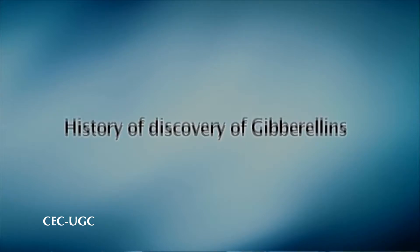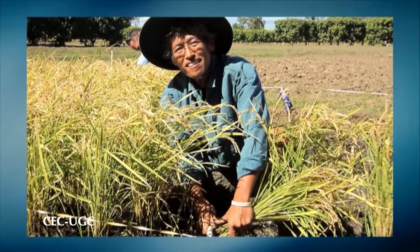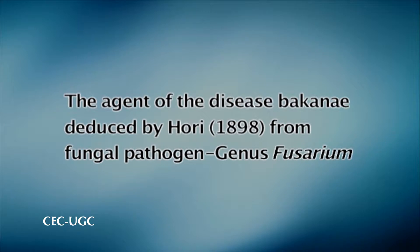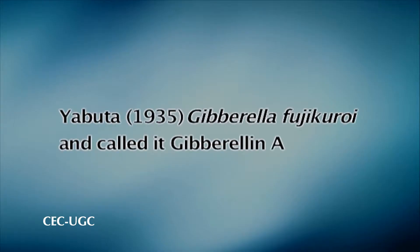Japanese farmers first observed the phenomenon of abnormal elongation in certain rice plants early in the season. These plants often became unhealthy and sterile. The Japanese gave this disease many names, but most commonly called it bakanae, meaning foolish seedling. In 1898, the agent of the disease bakanae was identified by Hori as being a fungal pathogen of the genus Fusarium. In 1926, Kurosawa discovered that the disease was caused by substances secreted by the fungal species named Gibberella fujikuroi. In 1935, Yabuta isolated the compound from Gibberella fujikuroi and called it Gibberellin A.